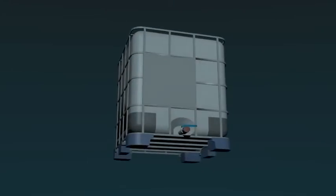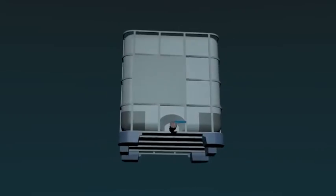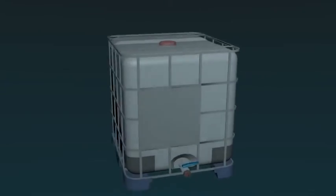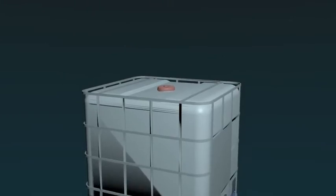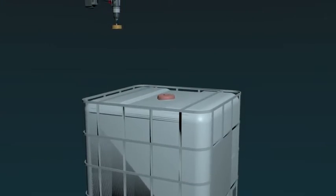Get yourself an old IBC tank, an international bulk container. You can find these used IBCs, these pallet-based 1000 liter plastic shipping containers literally all over the world. Take a three-inch hole saw and drill three holes in the top of the tank as shown.